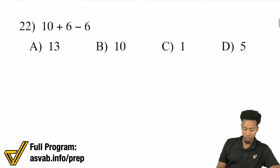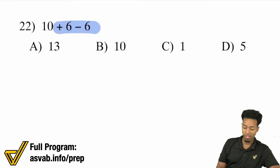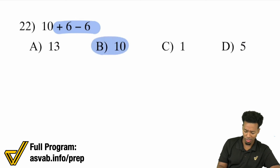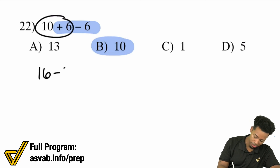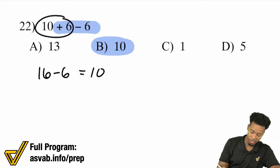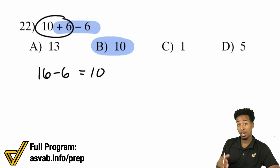Number 22: We have 10 plus 6 minus 6. If you add 6 and subtract 6, that cancels out — ending you right where you started at 10. But let's show the work: 10 plus 6 is 16, 16 minus 6 is 10. If you add and subtract the same thing, you end up right where you started. Same goes for multiplying and dividing the same thing.